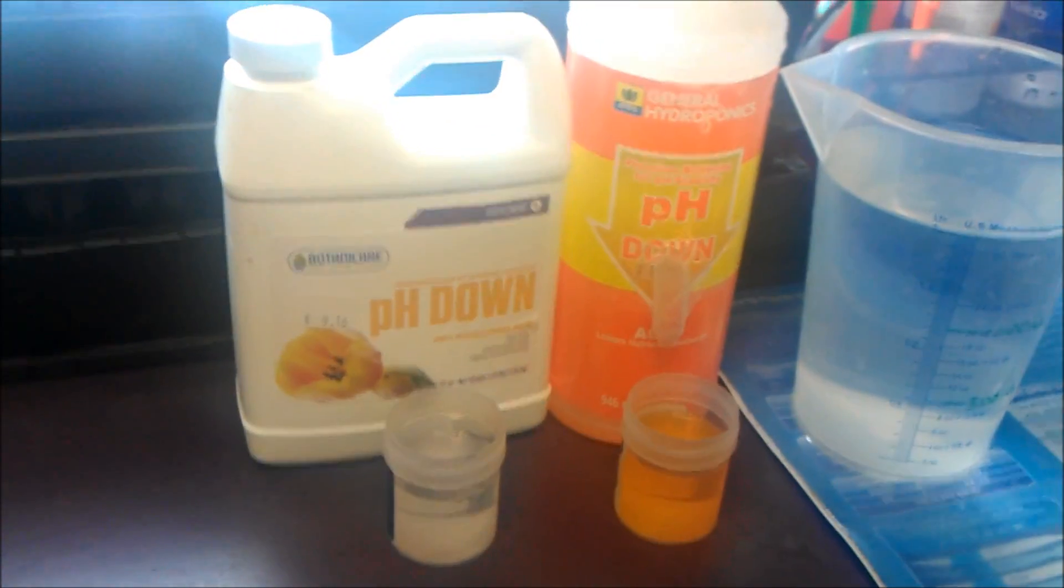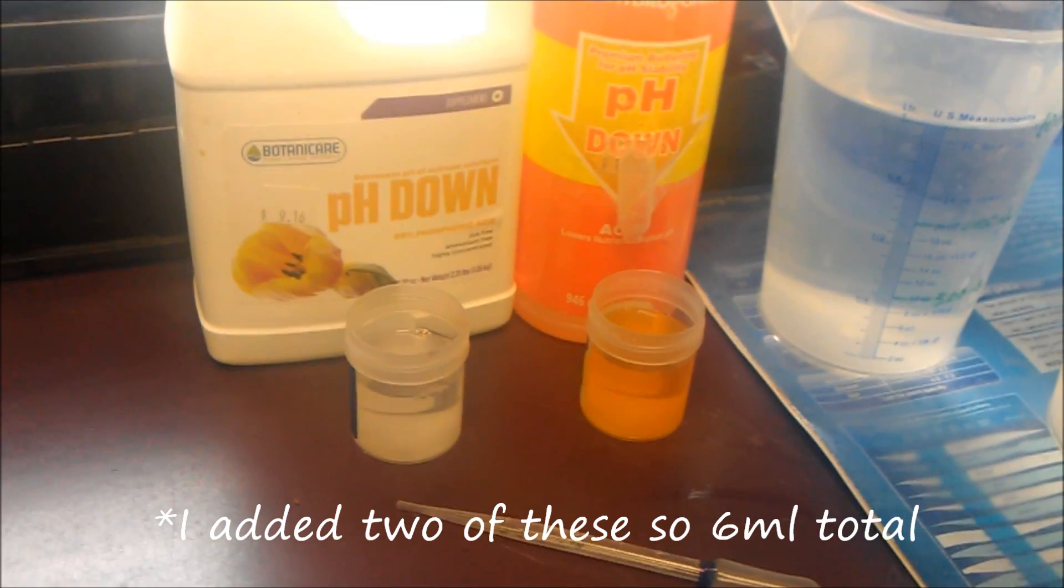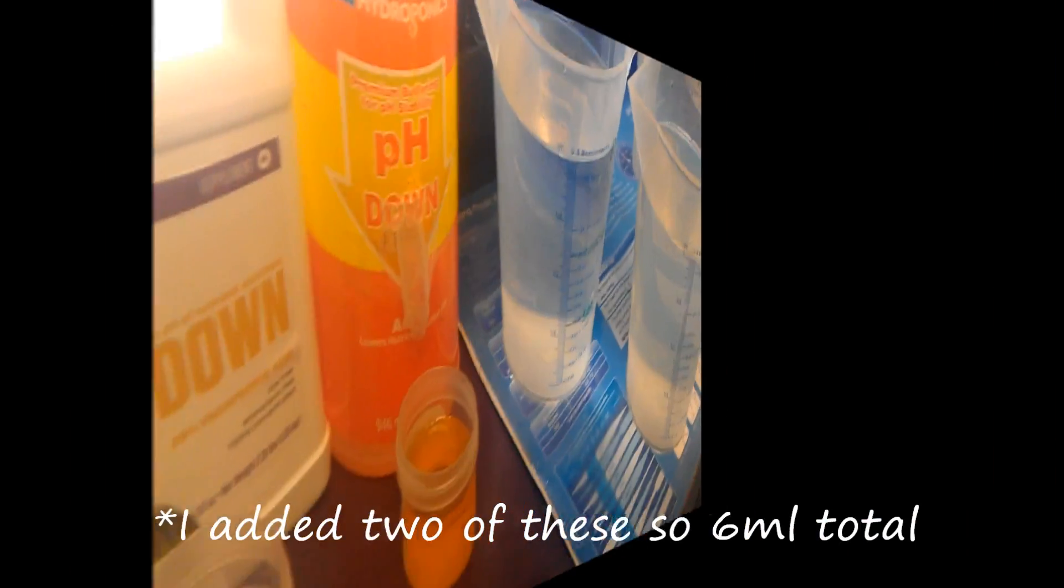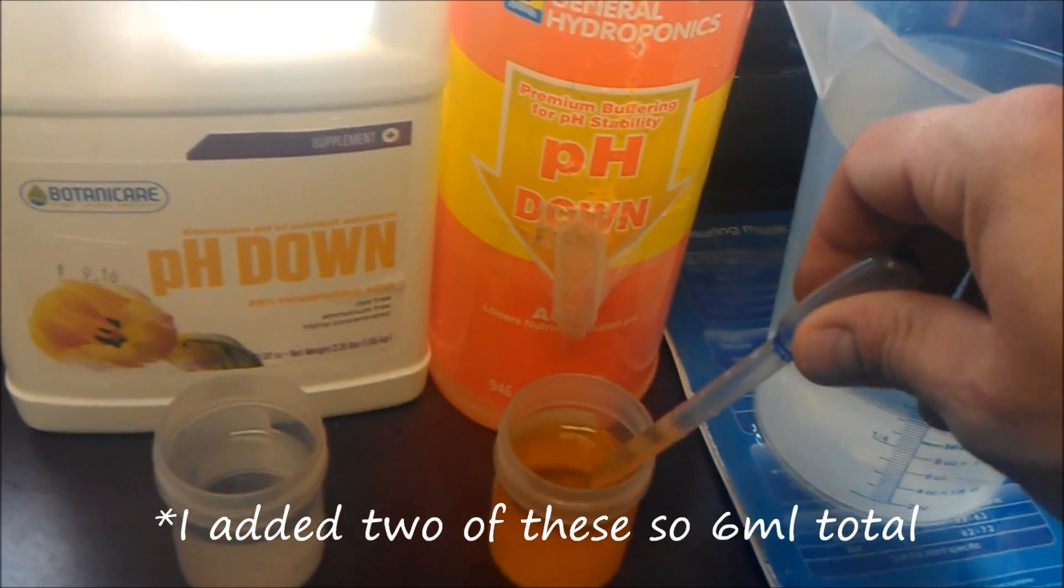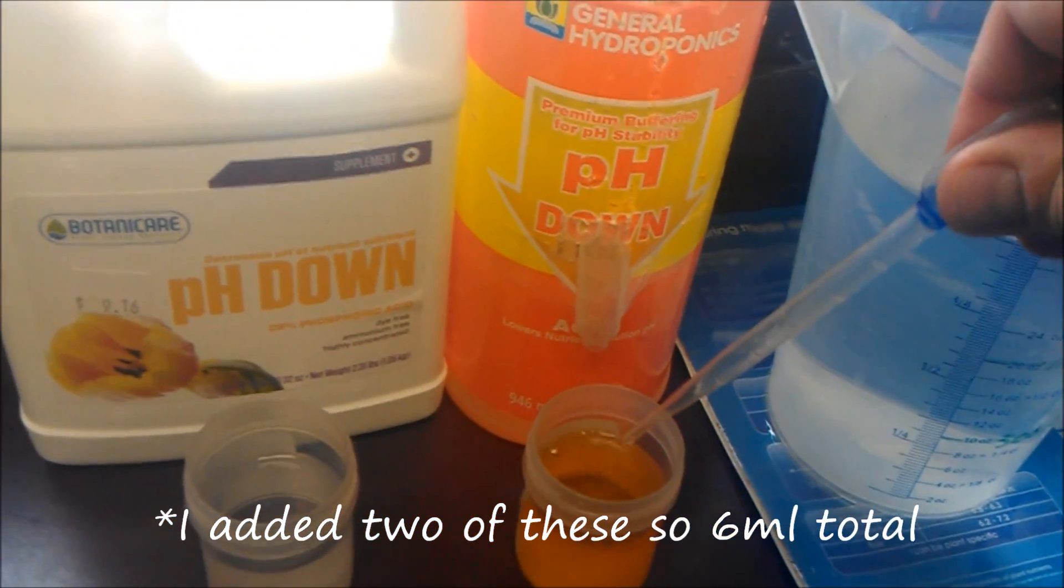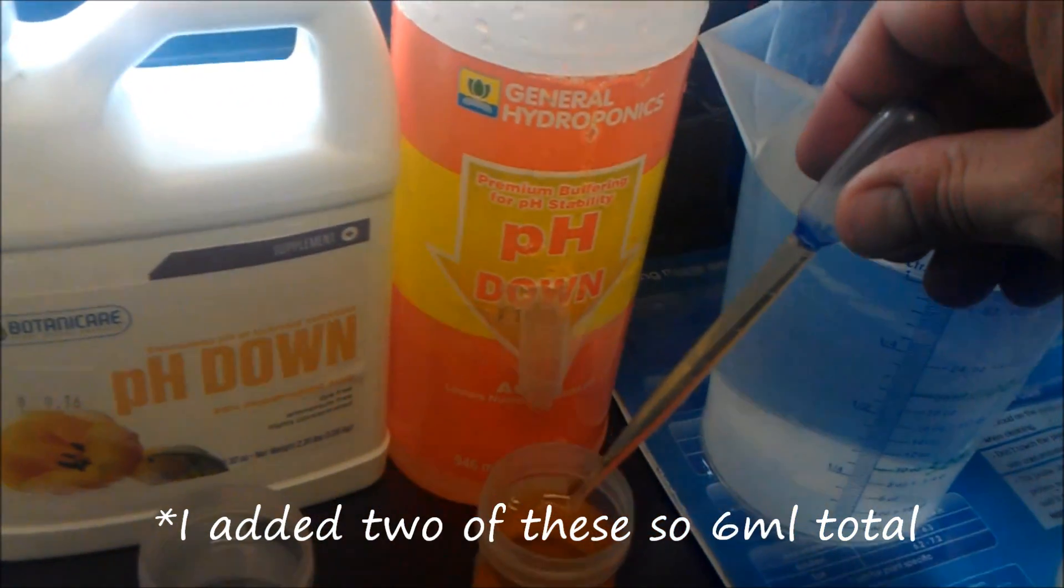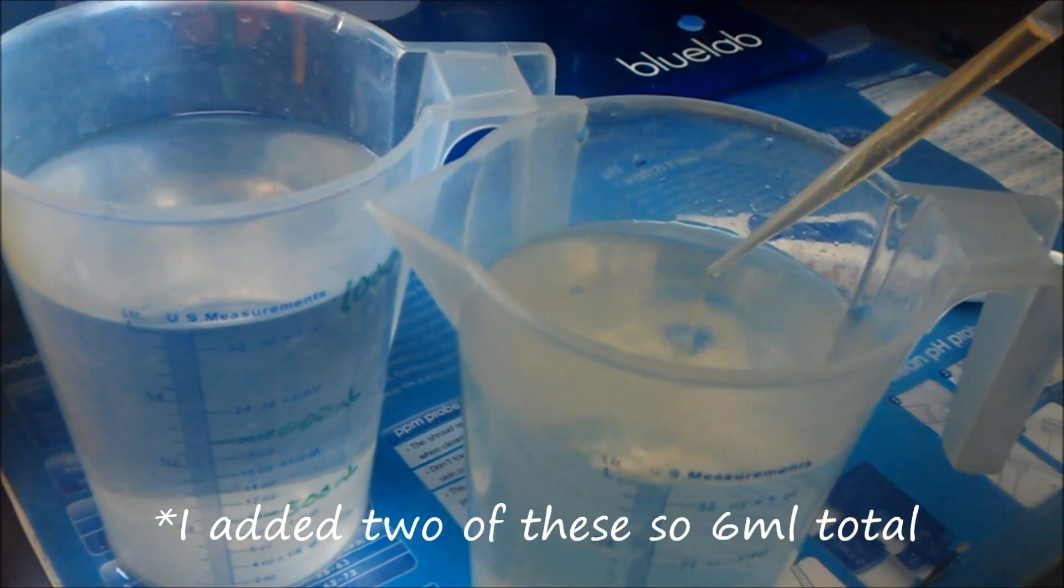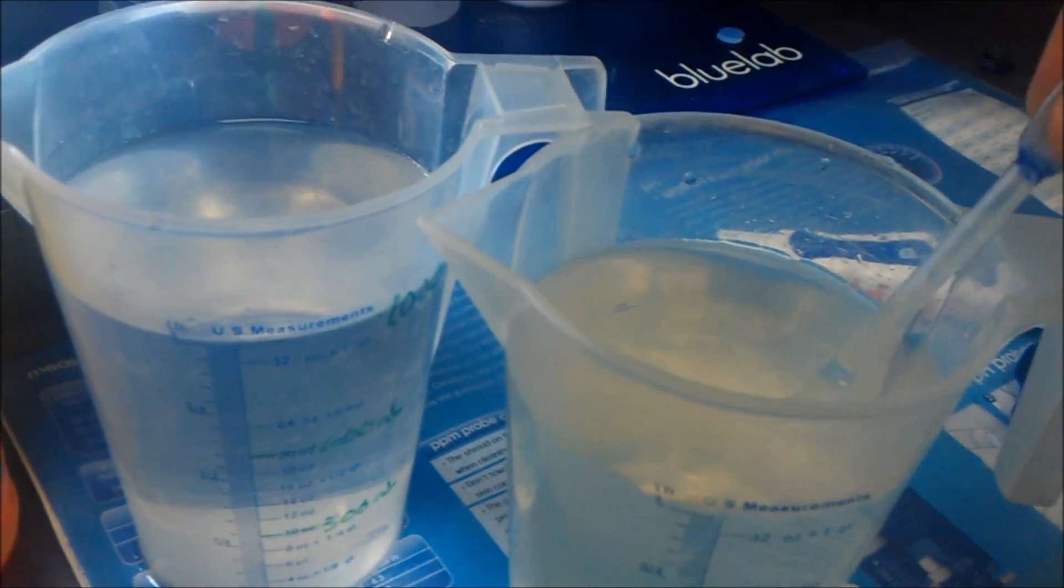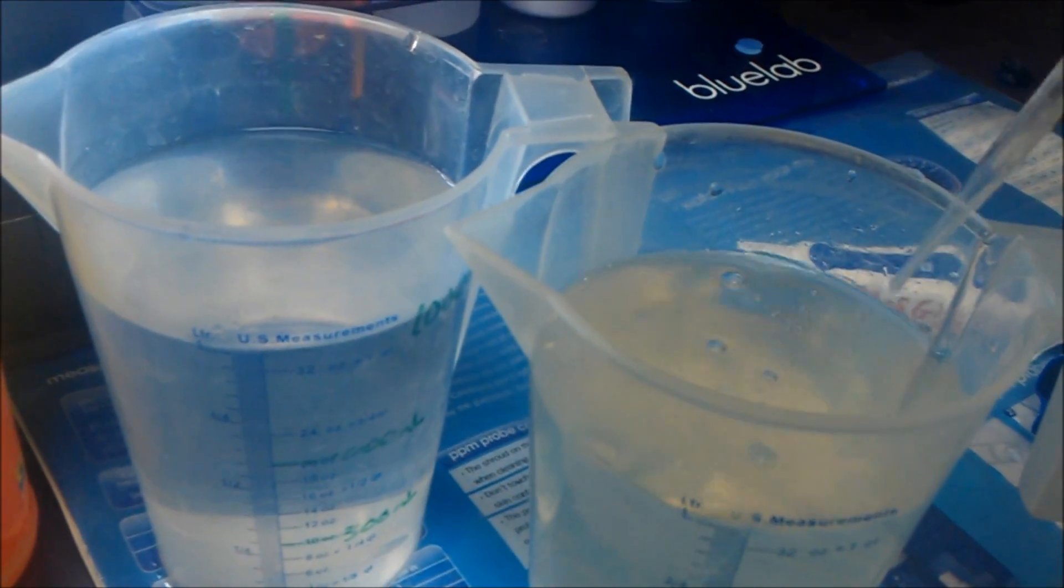General Hydroponics added the orange dye to it. So now I'm going to add 3ml of each into these separate containers. Alright, so now I'm adding 3ml of the GH, and I'm going to add this to the 1000ml solution.